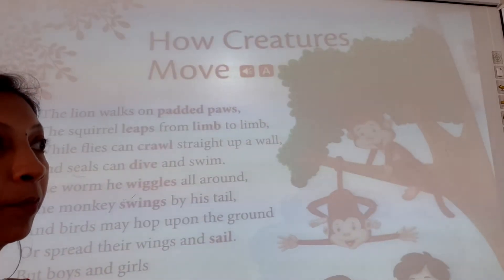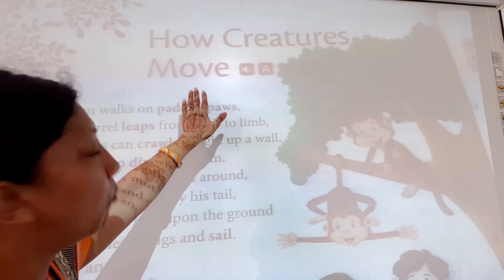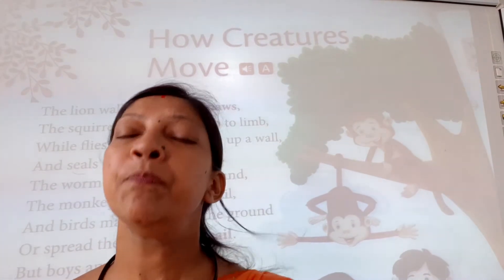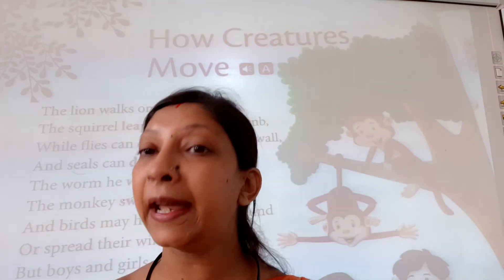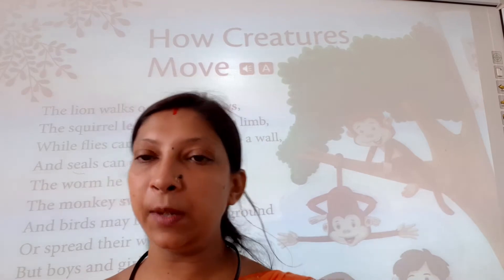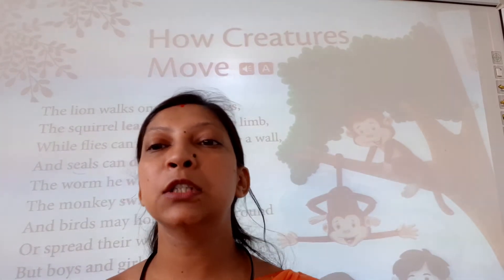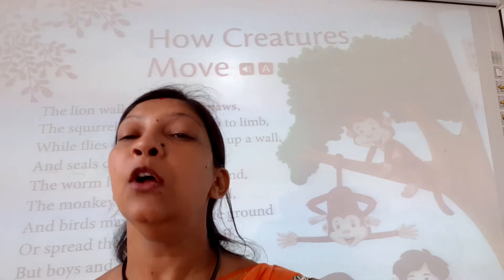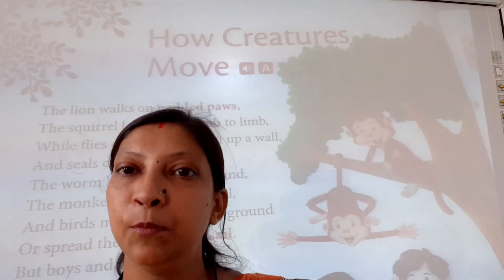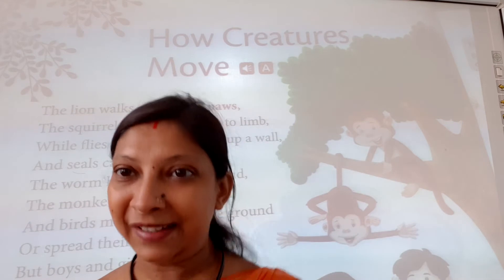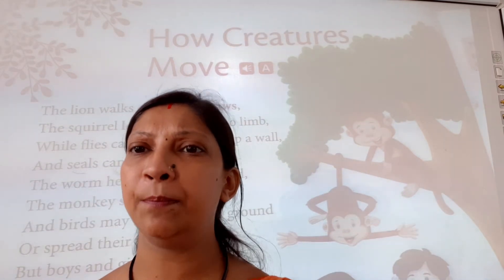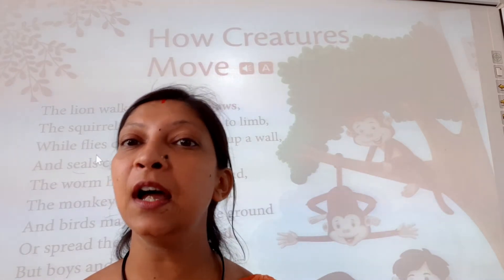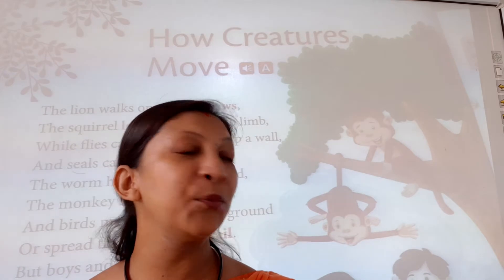The name of the poem is 'How Creatures Move.' Before starting the poem, let me explain. We have all living things — animals, birds, people — and they all move in different ways, from here to there. Small children also move in different ways: some run, some walk, some jump, and some even drag along — I have seen you in the classroom doing that!